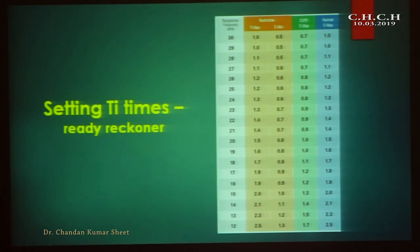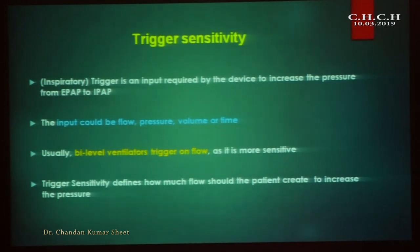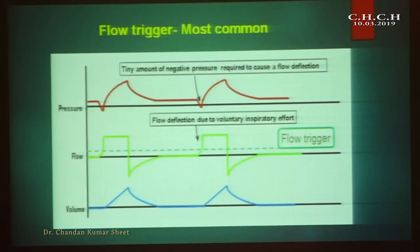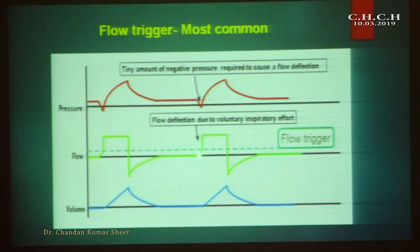Trigger sensitivity: trigger means the transition from EPAP to IPAP, determined by the patient — it may be flow, pressure, or volume dependent. In bi-level ventilators, triggers are usually flow-based because flow is more sensitive than pressure. The negative pressure generated by the patient is detected by the ventilator, which then delivers IPAP. The flow generated by the patient is sensed by the ventilator, which then gives a breath.